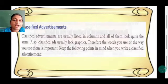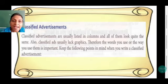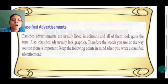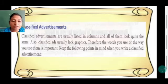Classified advertisements are usually listed in columns. Small boxes are made and in them they write. All of them look quite the same and are not colorful. It is usually a black and white ad. Also, classified ads usually lack graphics — there is no picture in classified ads.